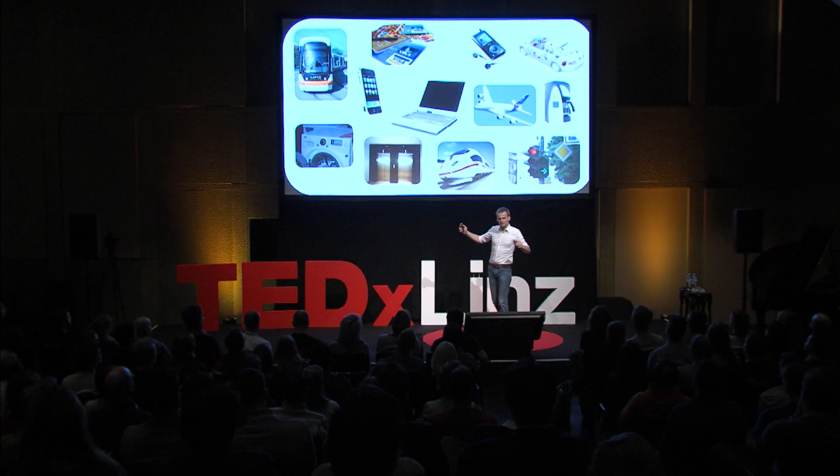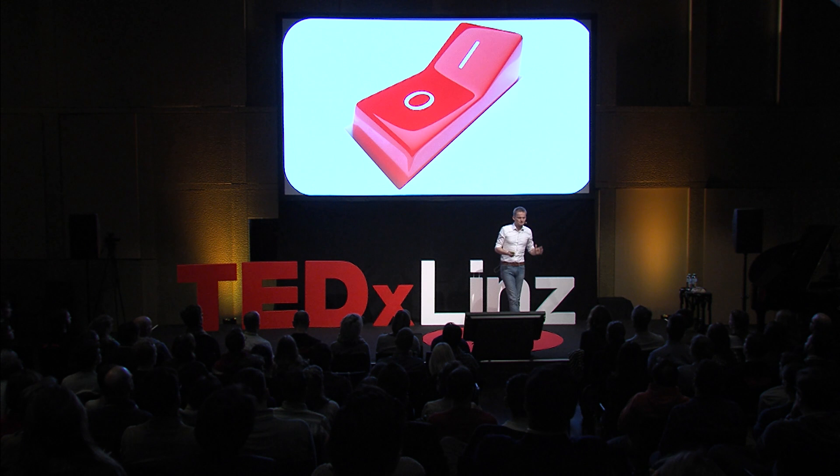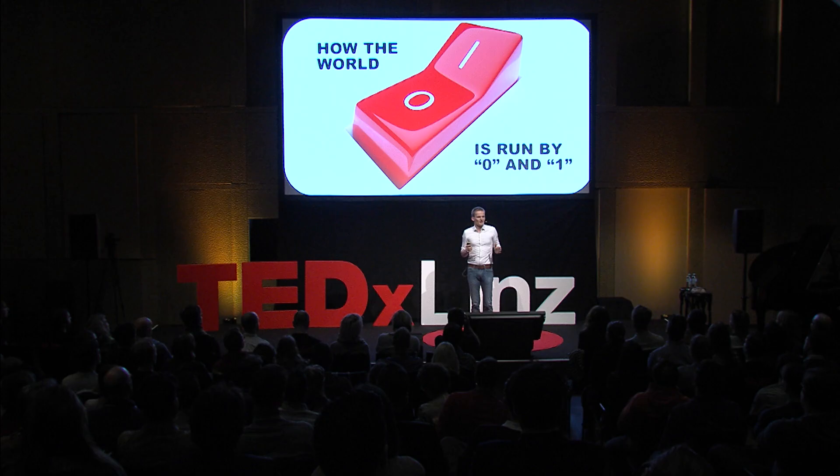Think about it. How is it possible that when you push one button in a coffee machine you get a latte macchiato, and if you push another button you get a cappuccino? This is only because there's a tiny computer inside your coffee machine. And what's even more fascinating: all these computers, which are literally running the world today, work with nothing else but zero and one. How is it possible that computers who run the world basically boil down to something as simple as zero and one?